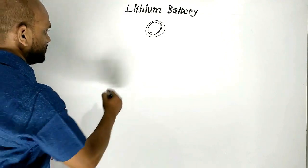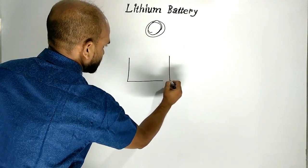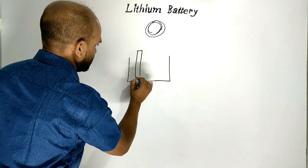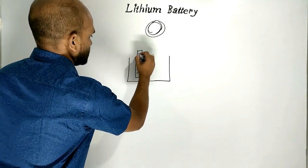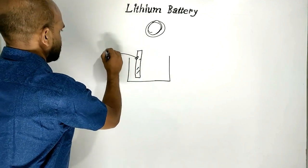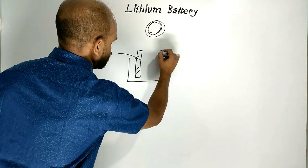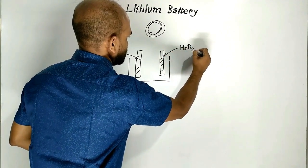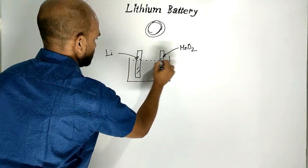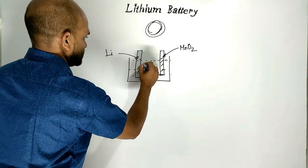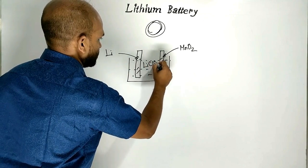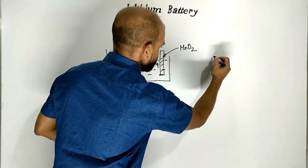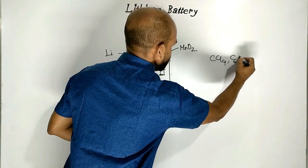A lithium battery can simply be shown in this way: a kind of vessel in which two rods or electrodes are introduced. One electrode is lithium and another electrode is manganese oxide. In this vessel, a kind of electrolyte — lithium perchlorate — is taken as electrolyte in an organic solvent, such as carbon tetrachloride, benzene, etc.